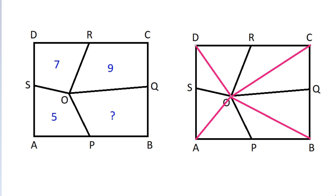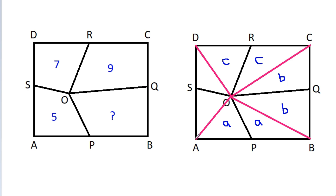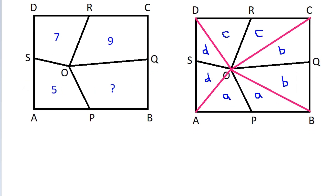Since AP is equal to BP, if this area is A, then the adjacent area will also be A. Since BQ is equal to CQ, if this area is B, then the adjacent area is also B. Since CR is equal to DR, if this area is C, then the adjacent area is C. And since DS is equal to AS, if this area is D, then the adjacent area is also D.